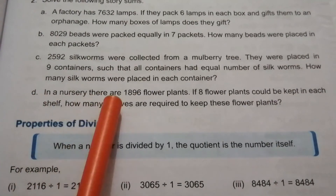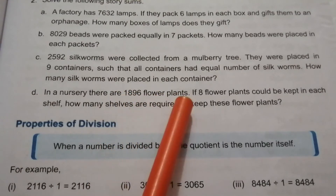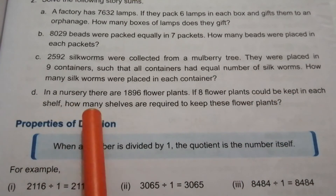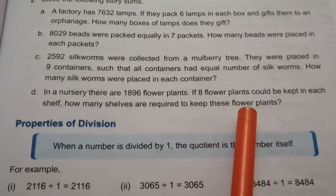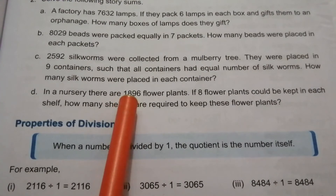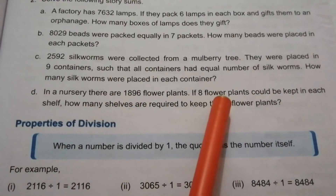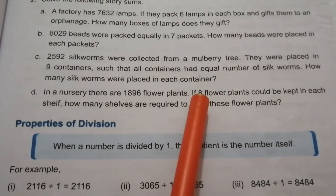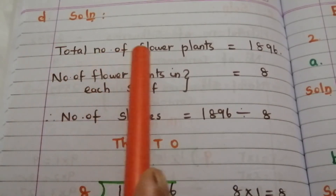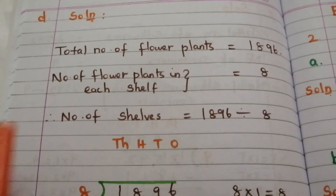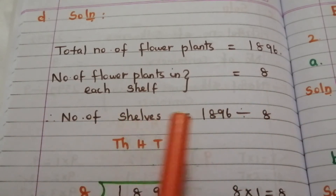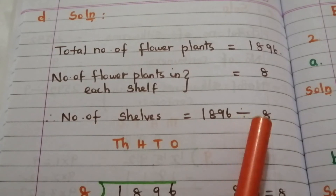Problem D: in a nursery there are 1896 flower plants. If 8 flower plants can be kept in each shelf, how many shelves are required to keep these flower plants? Total number of flower plants is 1896, number of flower plants in each shelf is 8. So number of shelves equals 1896 divided by 8.